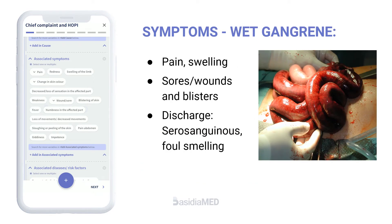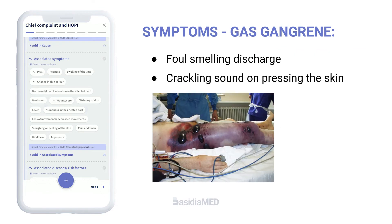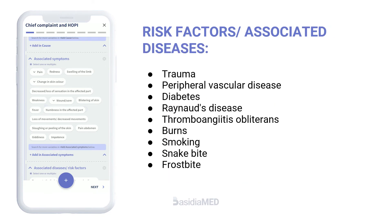Symptoms specifically seen in wet gangrene are swelling, blisters, and ulcers with serosanguinous discharge. In abdominal gangrene, pain in the abdomen and vomiting may be seen. Symptoms specific to gas gangrene include swelling and discharge which is serosanguinous, foul-smelling, or has a decaying apple odor. Pressing the skin may produce a crackling sound.